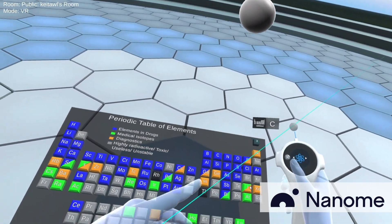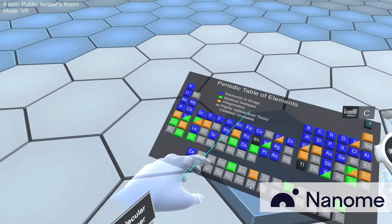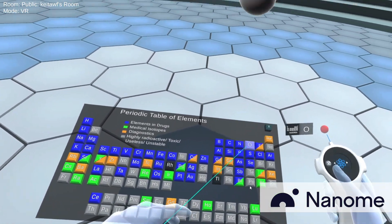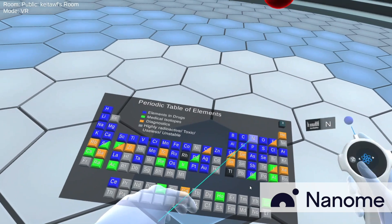So I can pull up the periodic table menu if I click on this button. And I could change this to let's say an oxygen or nitrogen.